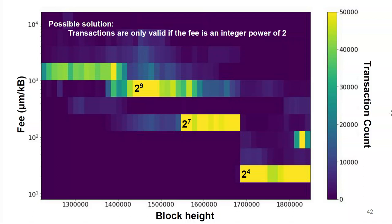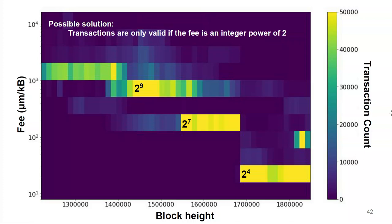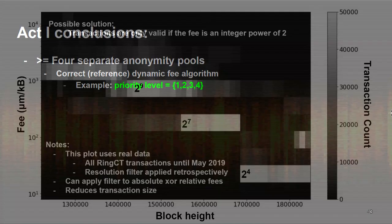My proposal — a possible solution — is that transactions would only be valid if the fee is an integer power of two. I've taken all the real RingCT transactions, 3.7 million, and retroactively rounded to the nearest power of two. Now you still have a fee market — people can still pay more or less depending on block size or how fast they need to be included — but we've really limited how much software can be fee-fingerprinted. This could be applied to either absolute fees or relative fees. The funny thing is this actually reduces transaction size, because you go from many significant figures to just specifying an integer.